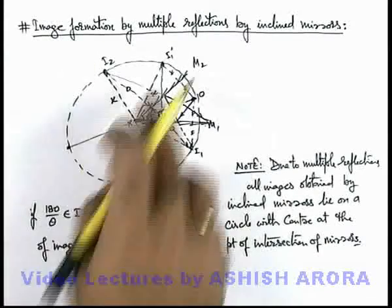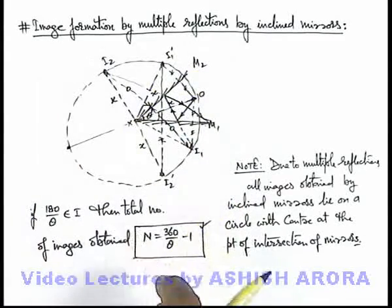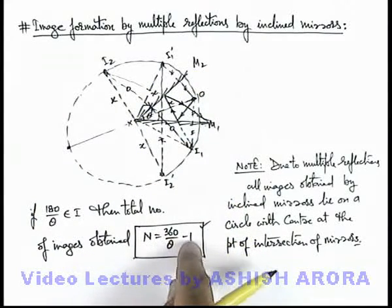So total number of images in that situation we can see, out of whole 360 degrees, will be 360 by theta minus 1.